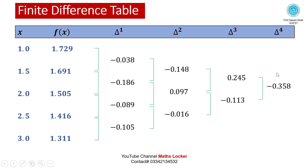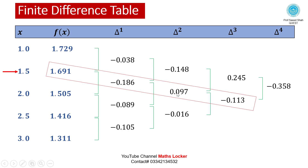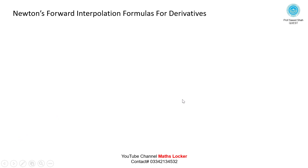We want to calculate the derivative at x = 1.5. The value 1.5 is above the center (2.0). The corresponding f(x₀) = 1.691. Draw the forward diagonal at that point and identify: the first difference, second difference, and third difference lying along the forward diagonal. Apply Newton's forward interpolation formula for derivatives.